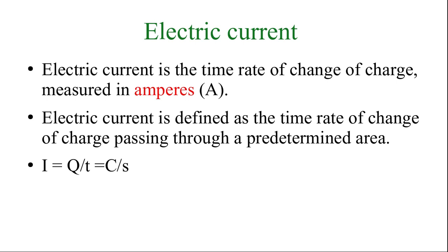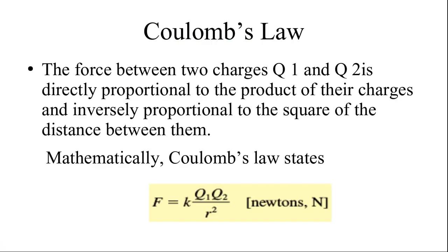Electric current is the time rate of change of charge, measured in amperes. The formula is: current I equals Q divided by t, where Q is the charge measured in coulombs and t is the time measured in seconds.